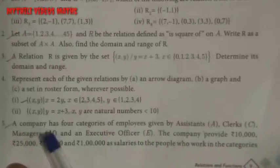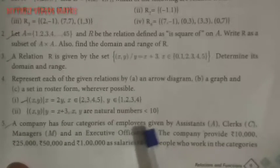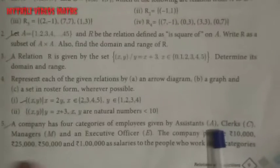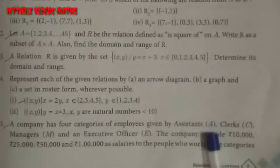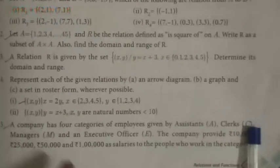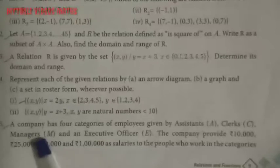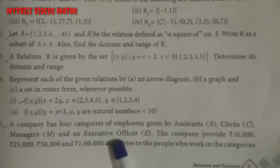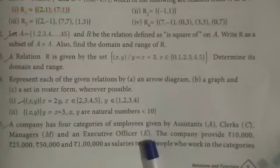A company has 4 categories of employees: assistants (denoted by A), clerks (denoted by C), managers (denoted by M), and an executive officer (denoted by E).